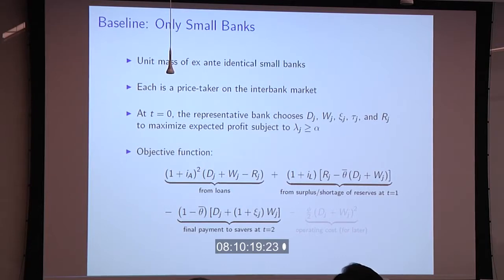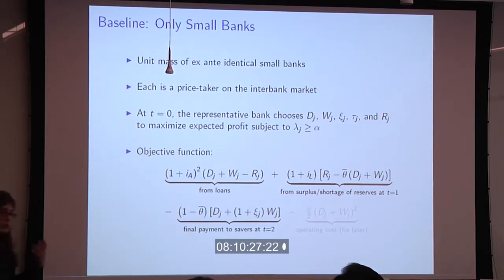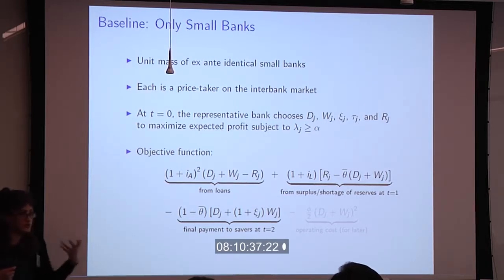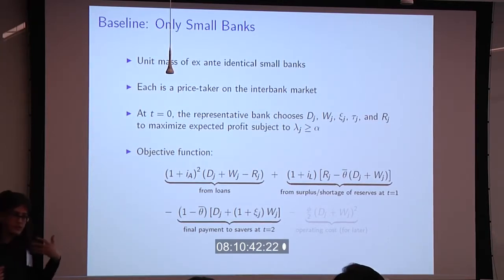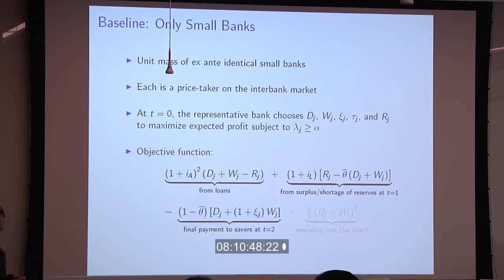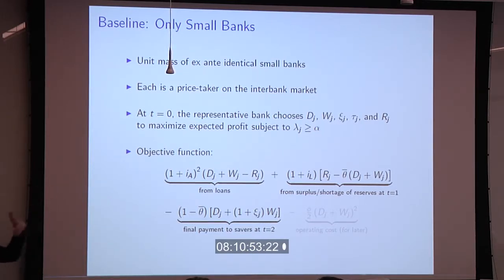We go through two exercises. One is a world with only small banks — banks that take prices as given in the interbank market. The interbank market is where you go if you need emergency liquidity in the intermediate period. If you view yourself as sufficiently small that your actions won't affect interbank prices, you're a price taker. We show that in this case with only small banks, you will not get a credit boom.